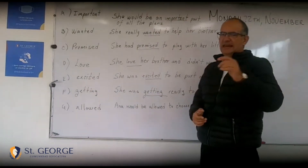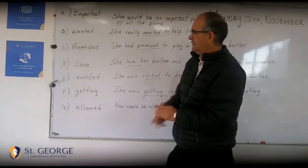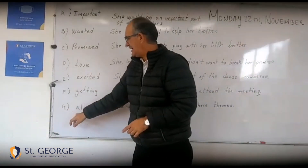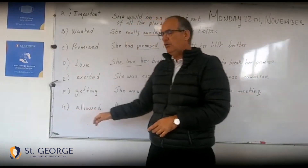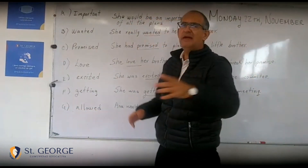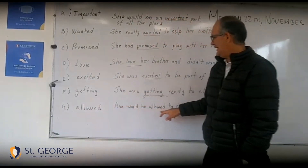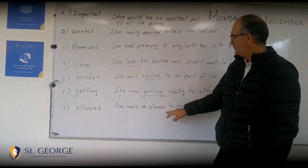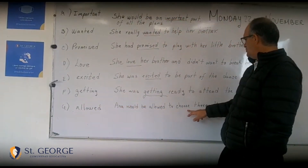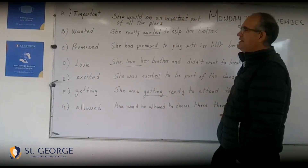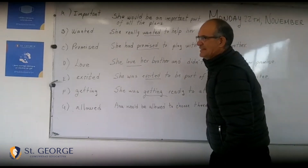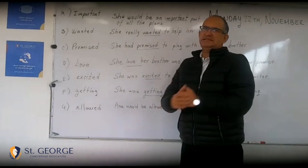And the last one, G: that's 'allowed.' And we can make a sentence: 'Anna will be allowed to choose three teams.'